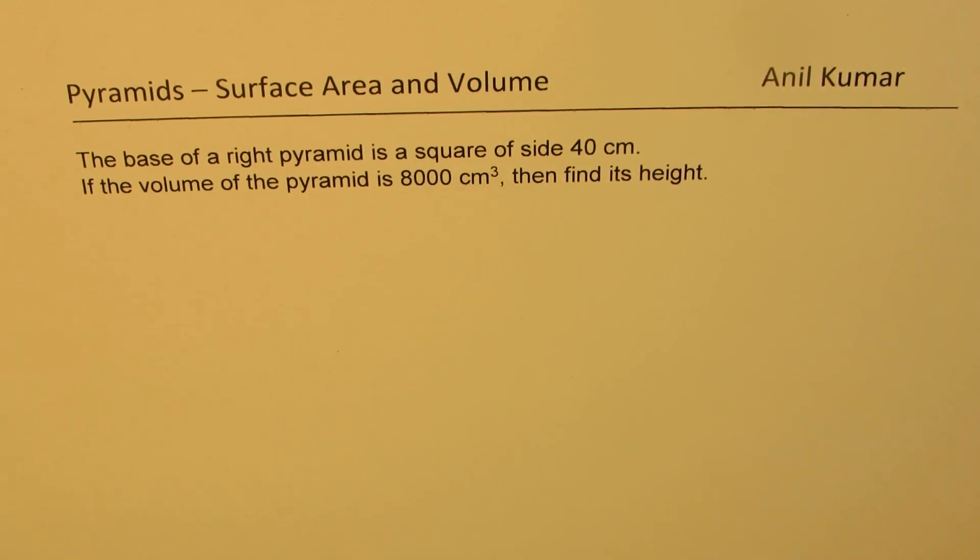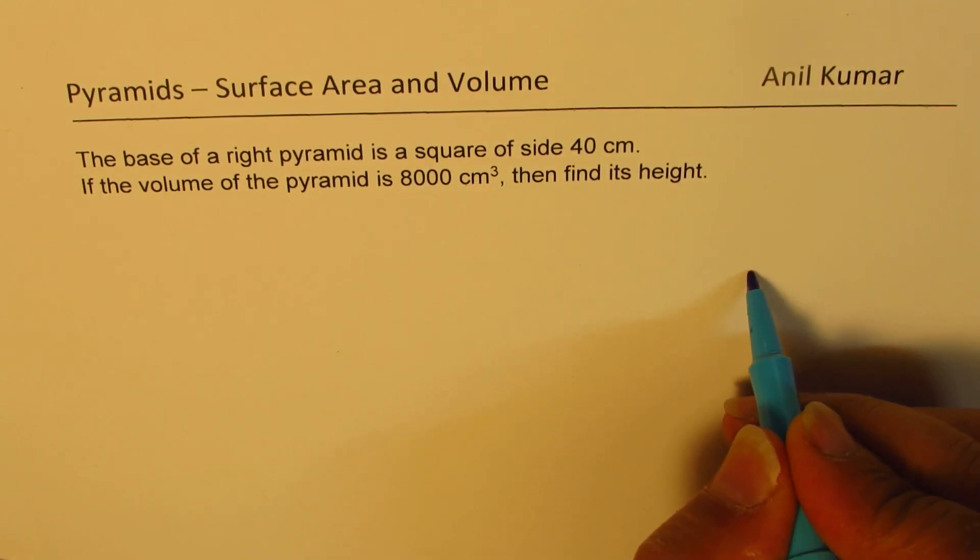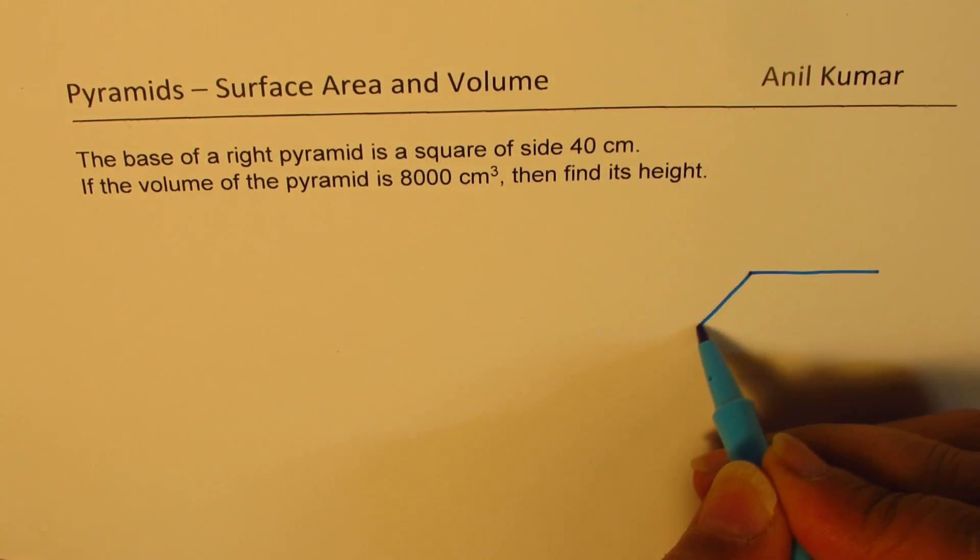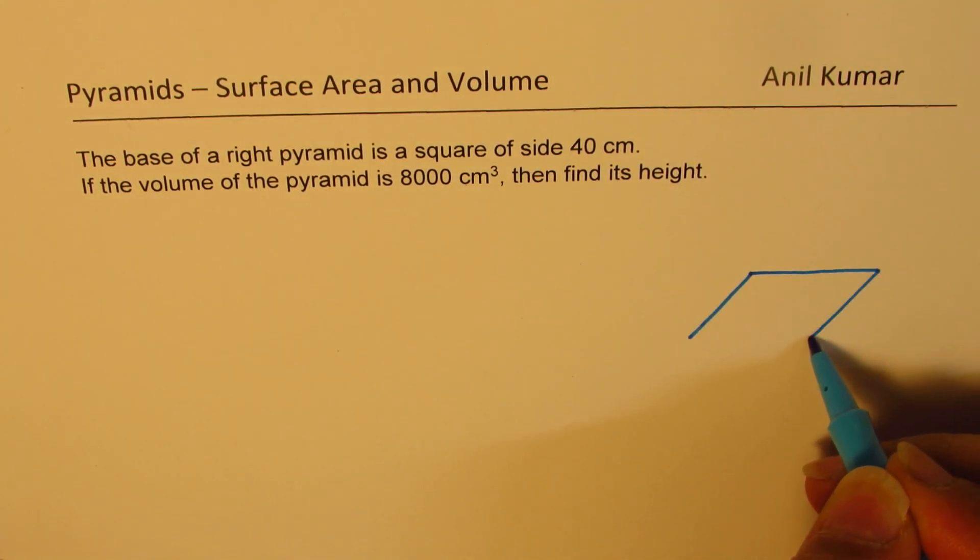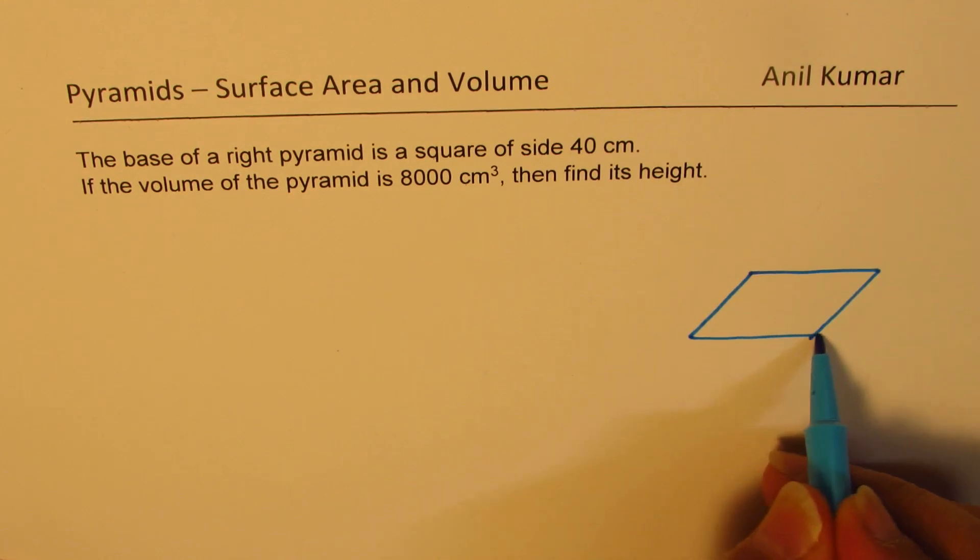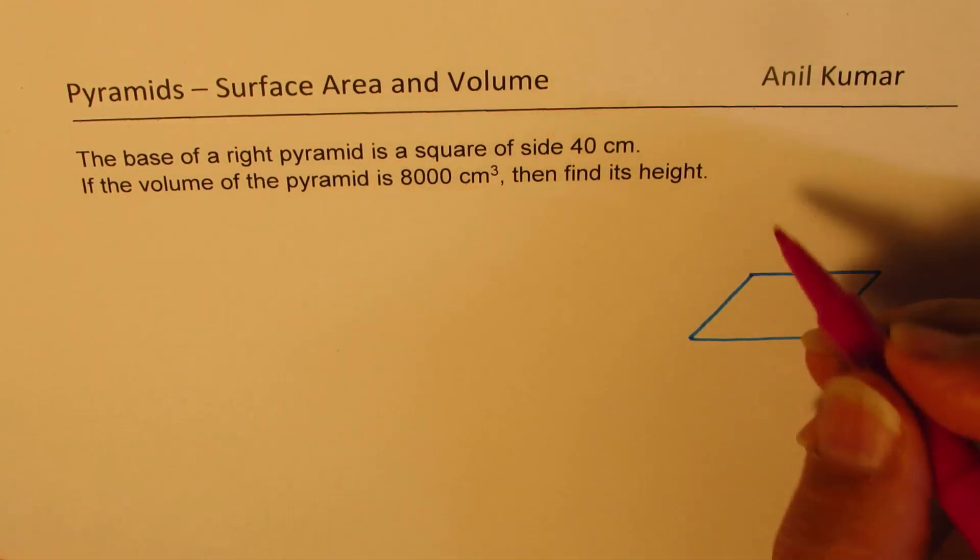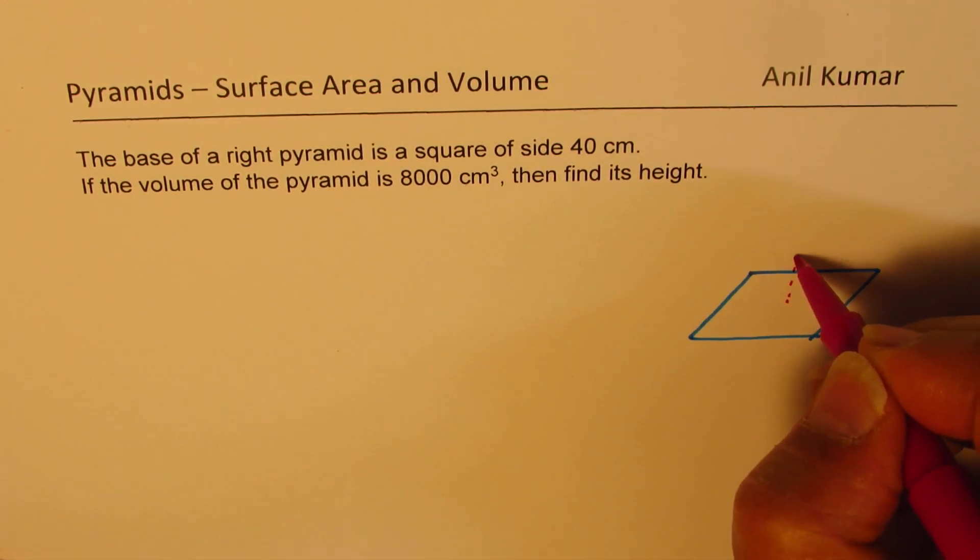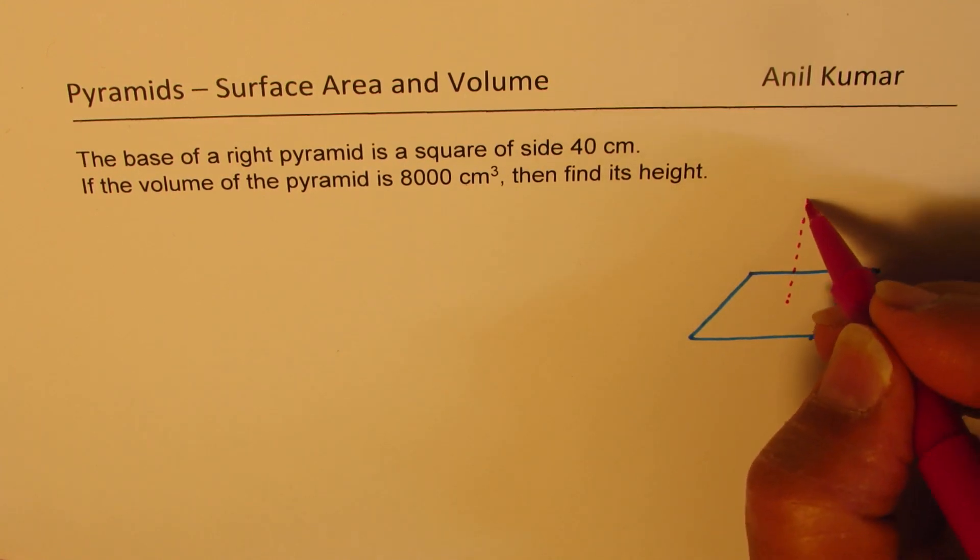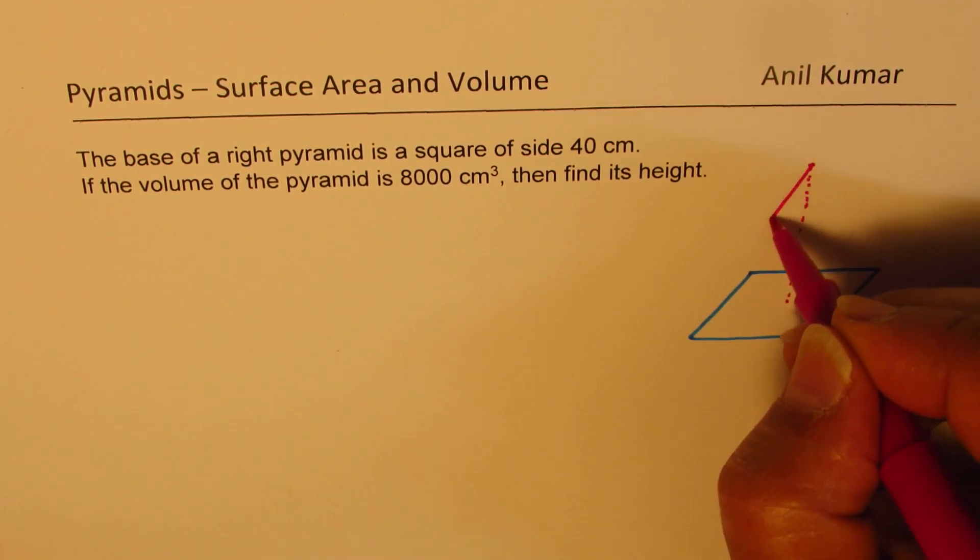So what we are given here is a base that is a square. Let's say this is the base, right? It is a pyramid, so we'll have one vertex here. We can join with all these sides to form the pyramid.